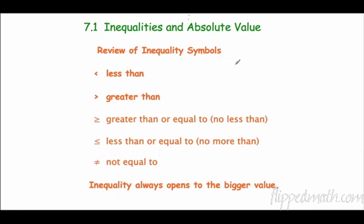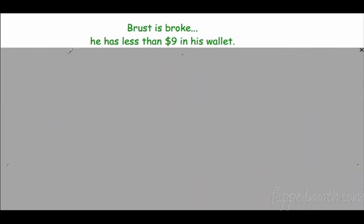Alright, inequalities and absolute value. Here we go. Inequalities, let's review these symbols even though we've already done this once this year. Remember, less than, greater than. Less than always points to the thing that's less than. It always opens up to the thing that's bigger than. Greater than or equal to, also known as no less than. Less than or equal to, also known as no more than. And this one that we didn't work with, it's not equal to. Alright, inequality always opens up to the bigger value.